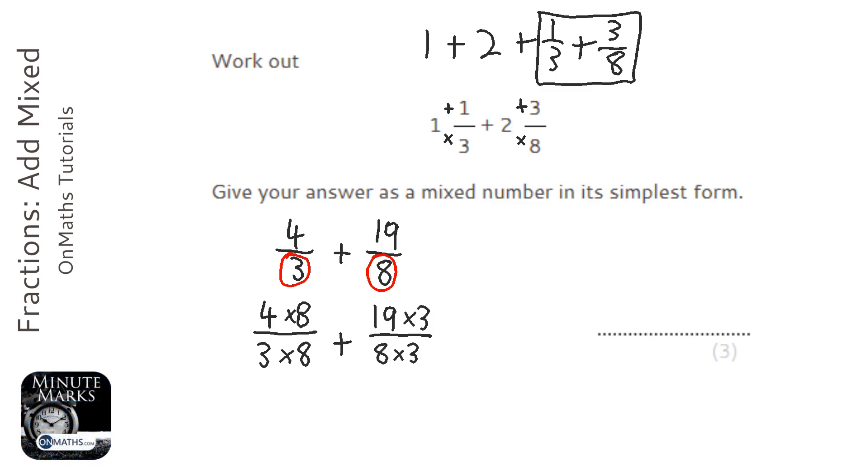So that gives us 32 over 24, plus, and then 19 times 3, I could do 20 times 3, which is 60, take away 3, which is 57, over 24.